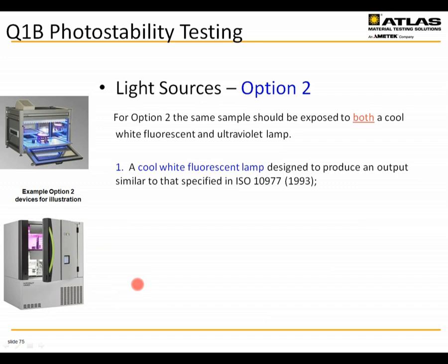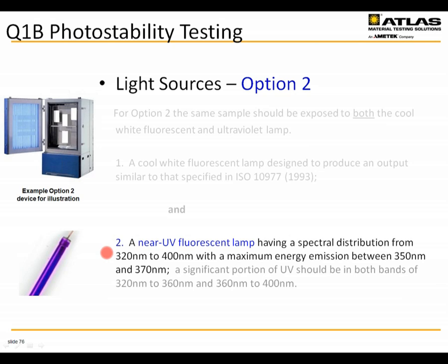The ICH guideline also provides an Option 2 light source using two types of fluorescent lamps. One is a cool white fluorescent lamp designed to reproduce the spectra in ISO 10977 — a visible daylight lamp. Then it requires a second separate UV lamp — a near-UV fluorescent lamp with a peak spectral emission between 350 and 370 nanometers. In some instruments, it's possible to combine both lamps into one instrument during one exposure, but more commonly you would have two separate exposures: one using the visible cool white fluorescent lamp and one using the UV lamp.